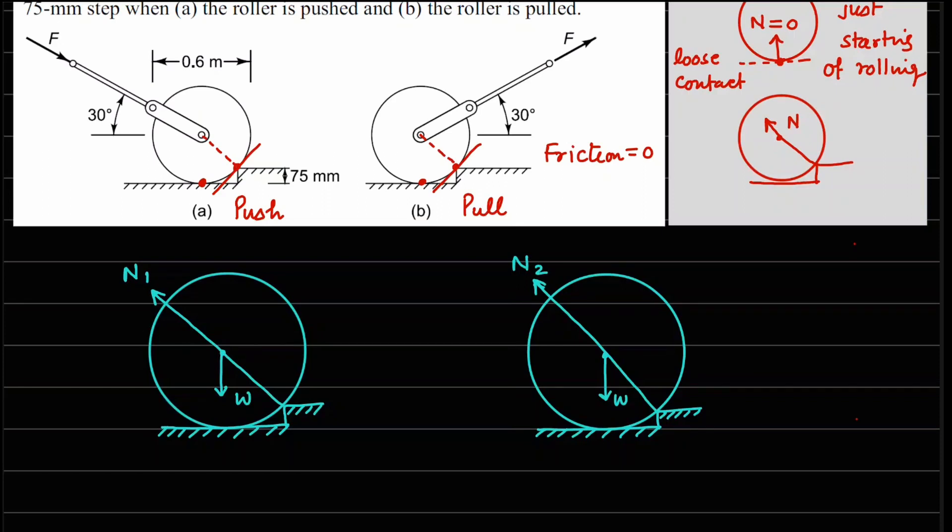And the other force that we have is the push or pull force. In this case, since it is being pushed, the F force that's going to come will be along this line right here and this is F1. Similarly, in this case your F2 is going to be acting here. You can see that the angle of this force is already given in the problem - this is at 30 degrees.